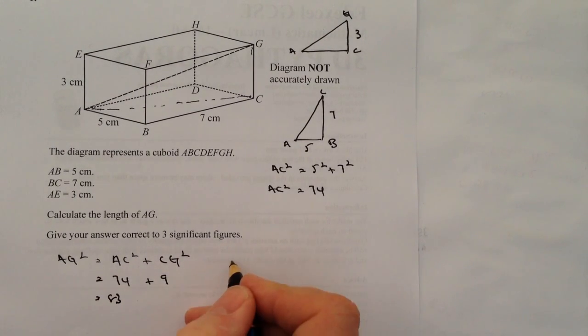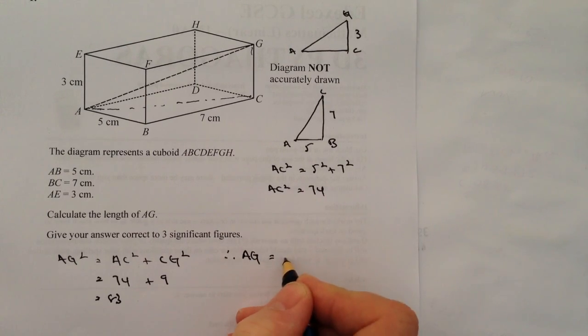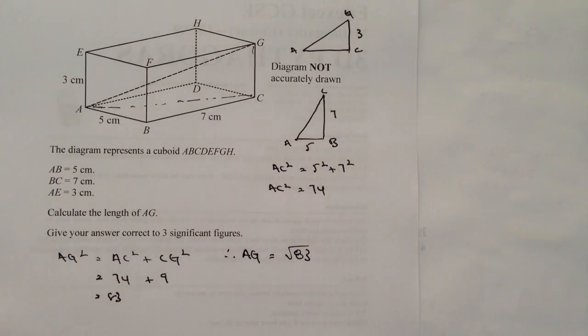So therefore AG on its own is going to be the root of 83, and if you plug that into your calculator you'll get something like 9.1104. So to answer the question to three significant figures, that's going to be 9.11.